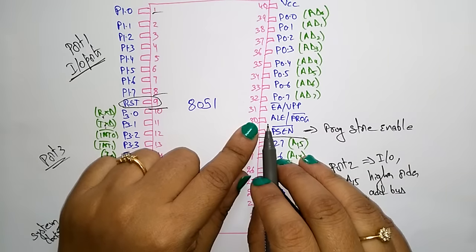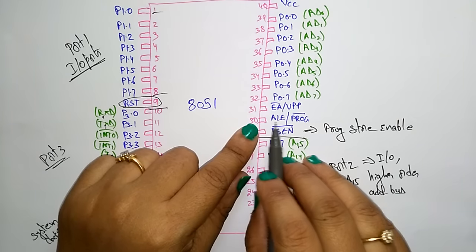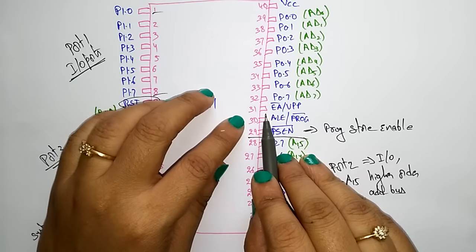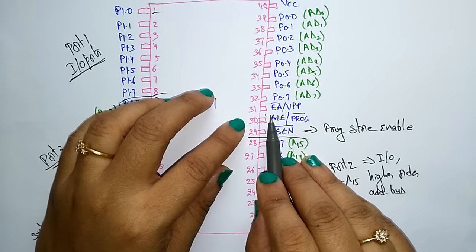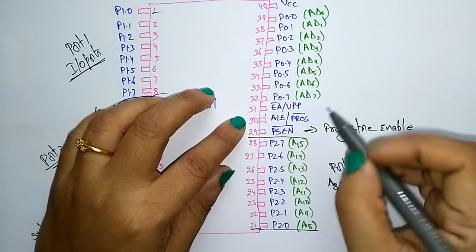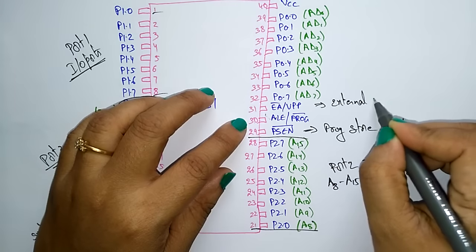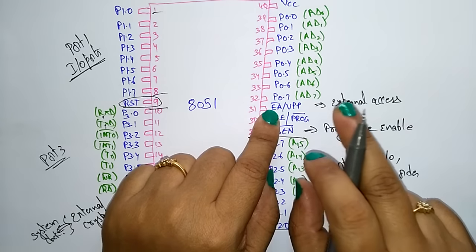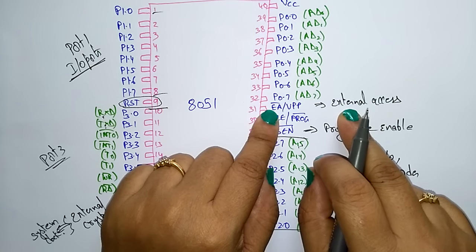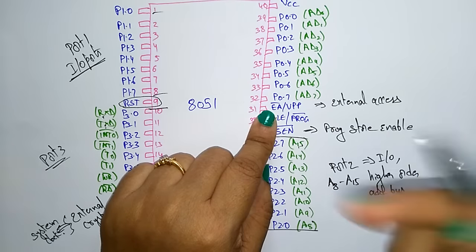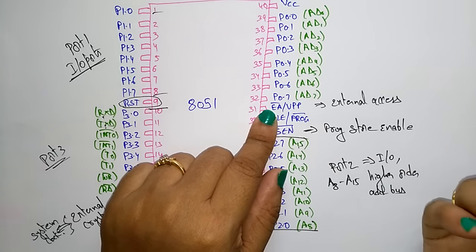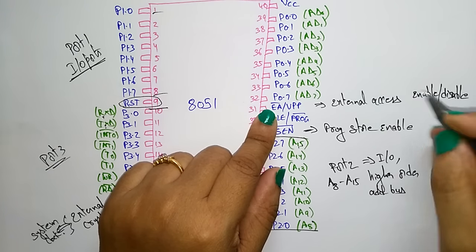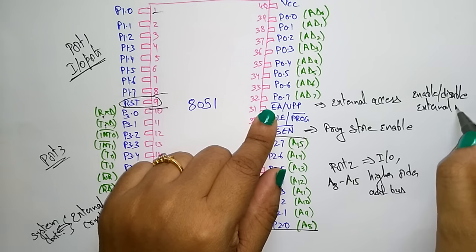Pin 30 is the Address Latch Enable pin — ALE. The address will be enabled using this pin. Pin 31 is EA, which stands for External Access. EA is used to enable or disable the external memory interface. As the name suggests, it allows the microcontroller to access data from external devices.